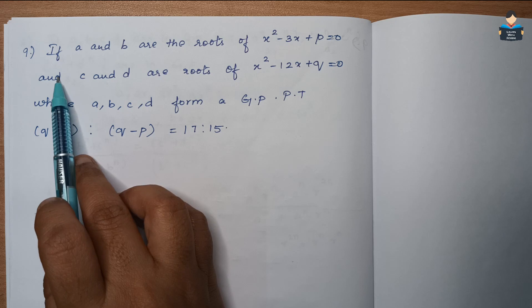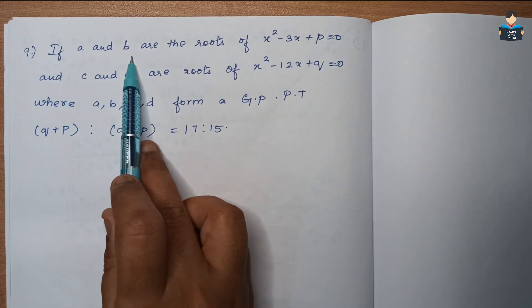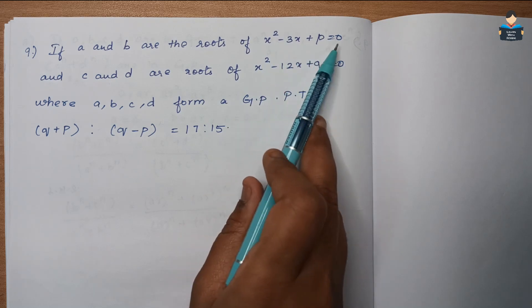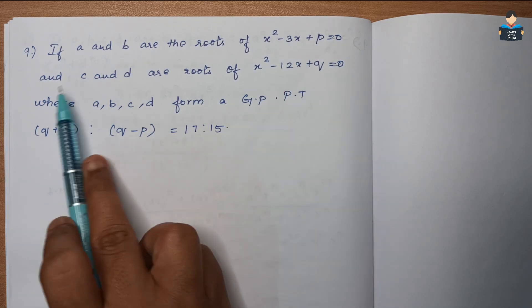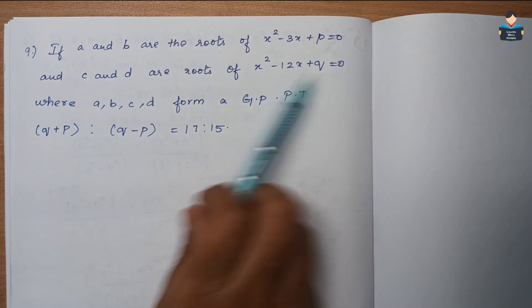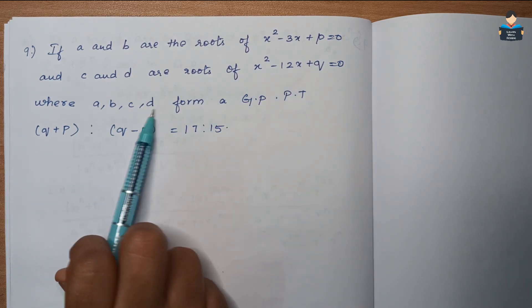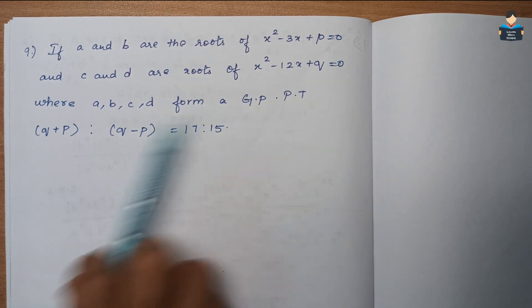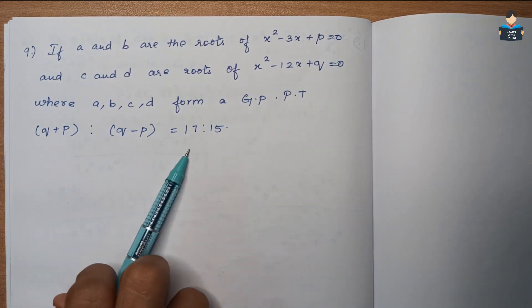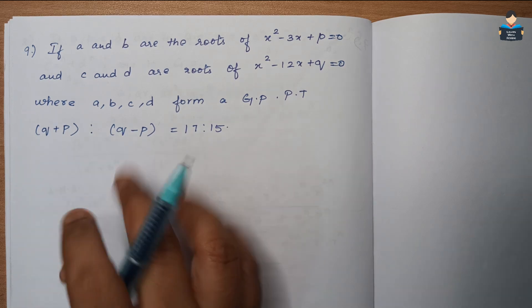Now the ninth question: If a and b are the roots of x² - 3x + p = 0, and c and d are the roots of x² - 12x + q = 0, where a, b, c, d form a GP, prove that (q + p) / (q - p) = 17/15.